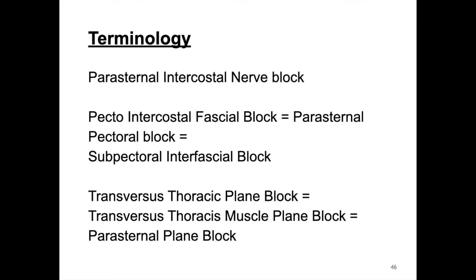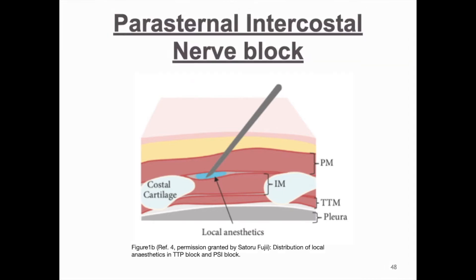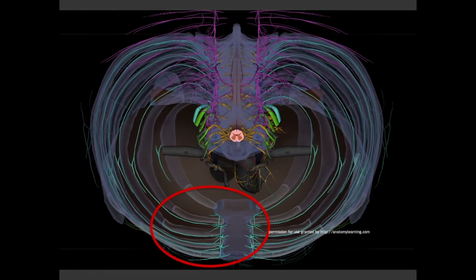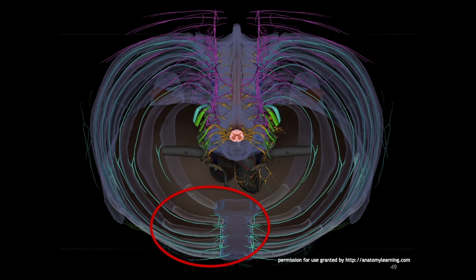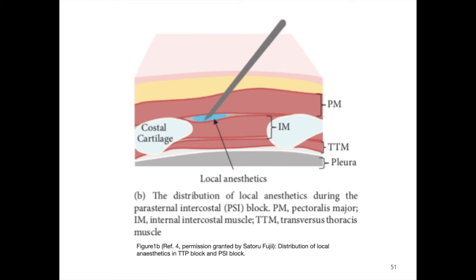The parasternal intercostal nerve block was first described by McDonald and co-workers in 2005, and targets the anterior intercostal nerves just lateral to the sternum as shown on the slide. Looking at a sagittal parasternal cross-section, local anesthetic is injected into the plane between the pectoralis major and the internal intercostal muscles.